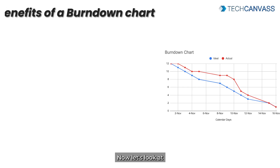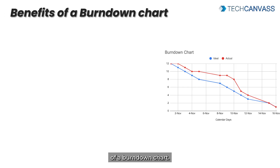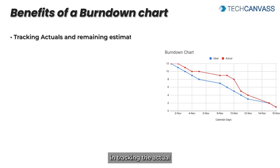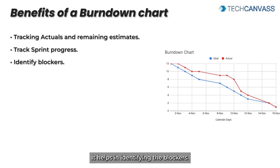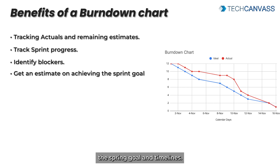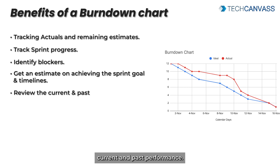Now let's look at some of the benefits of a burn down chart. It helps in tracking the actual and remaining estimates. It helps in tracking the sprint progress. It helps in identifying blockers and getting an estimate on achieving the sprint goal and timelines. And it helps in reviewing the current and past performance.